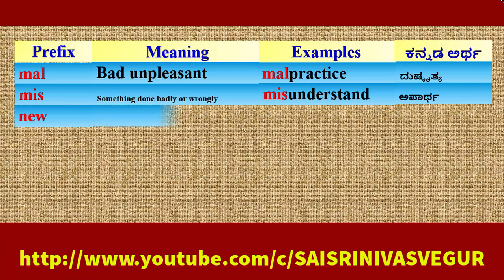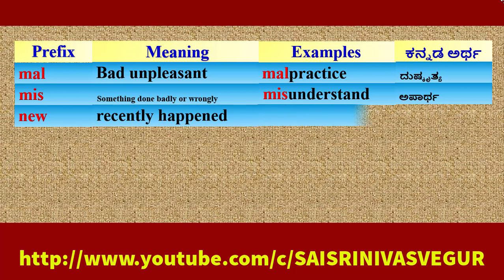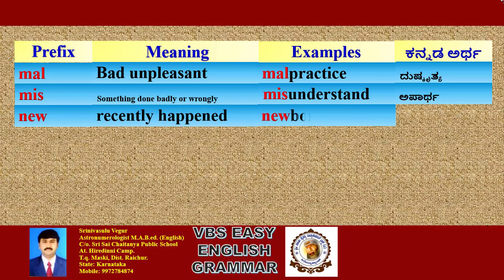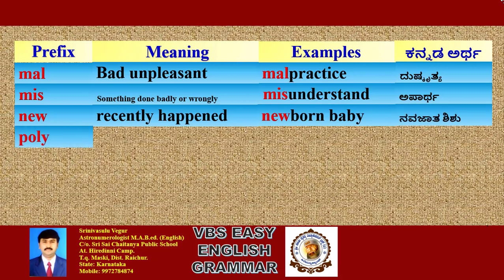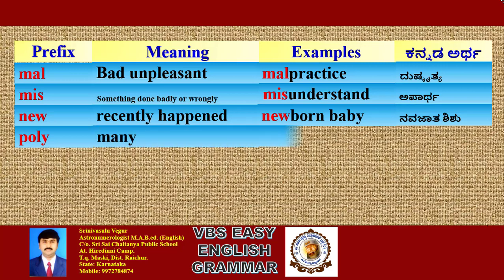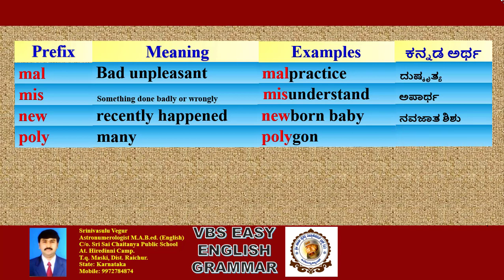Prefix 'New': its meaning is 'recently happened'. Example: Newborn baby. Kannada meaning: Navachata Shishu. Prefix 'Mini/Poly': Example: Polygon. Kannada meaning: Bahu Bajakruti — many-sided figure.